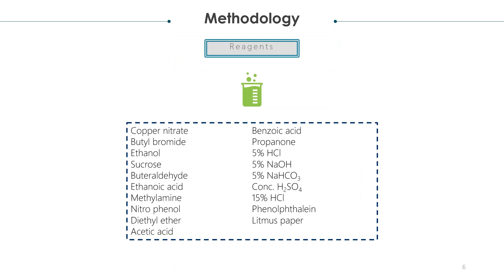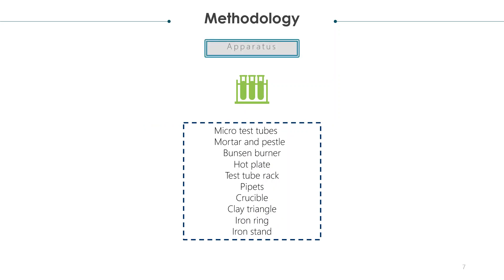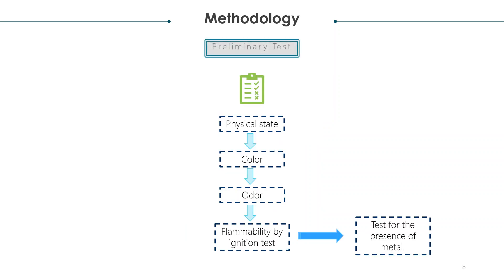Listed in this slide are the reagents used for this experiment. The classification of the samples was done by performing preliminary tests. The physical state of the compound and the changes in color and odor were observed, and the flammability of the compound is tested using the ignition test.